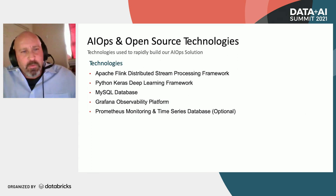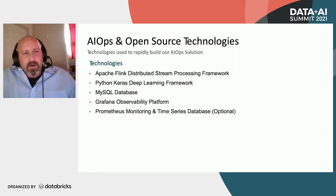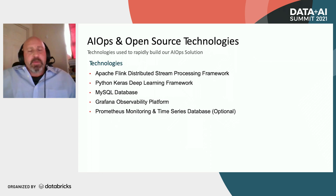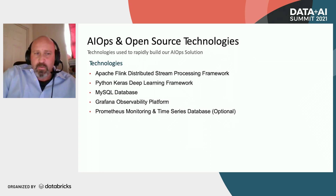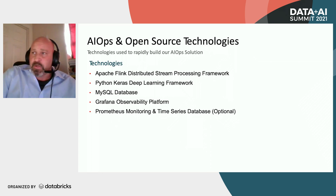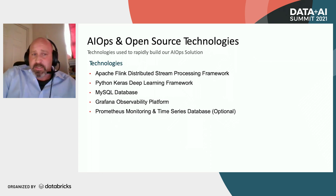Some of the technologies we used in our hackathon AIOps platform: Apache Flink, a distributed stream processing framework; Python Keras, a deep learning framework; MySQL database to maintain our data; the Grafana observability platform for dashboards, reporting, and alerting; and optionally, we also implemented Prometheus for monitoring and as a time series database.